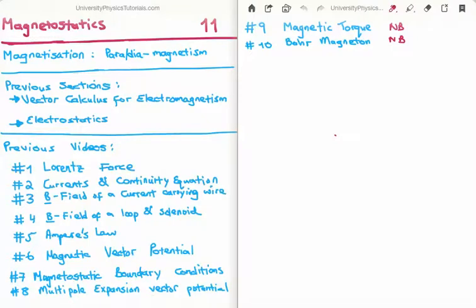In this video I'm going to continue with my tutorials on magnetostatics. This is video number 11 and I'm going to discuss magnetization or magnetic polarization, specifically paramagnetism and diamagnetism. There are 10 previous videos in this section. The two most important are videos 9 and 10 where I discussed magnetic torque and the Bohr magneton.